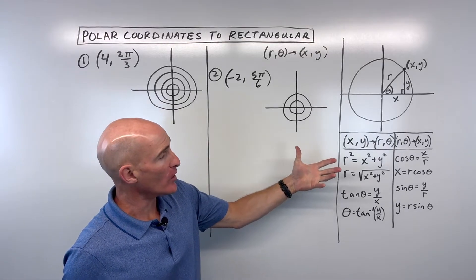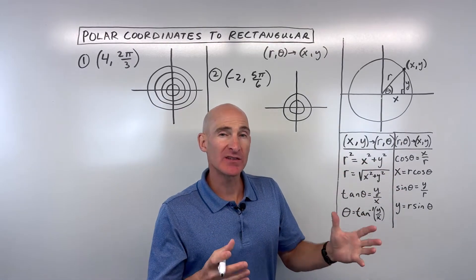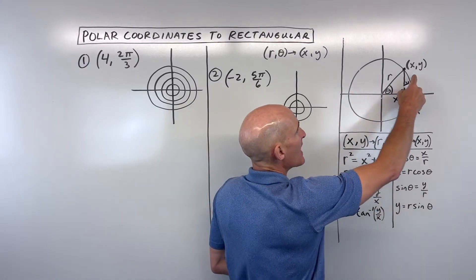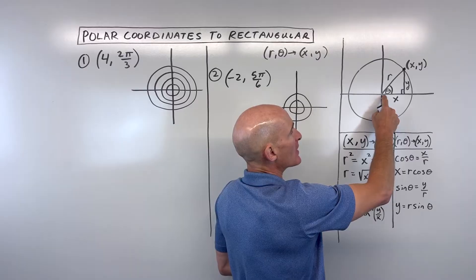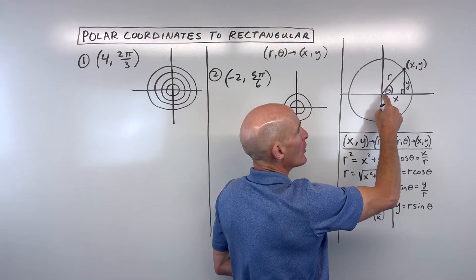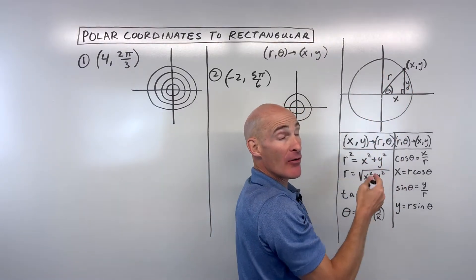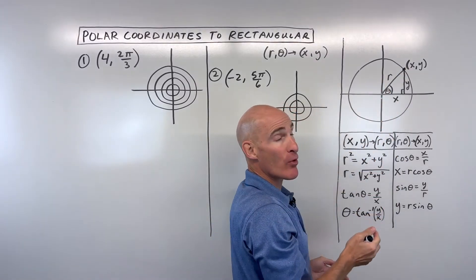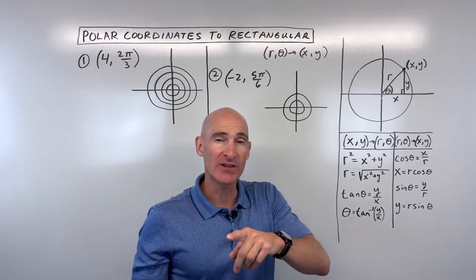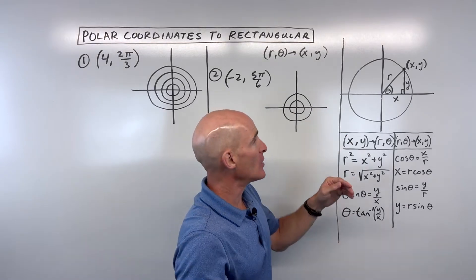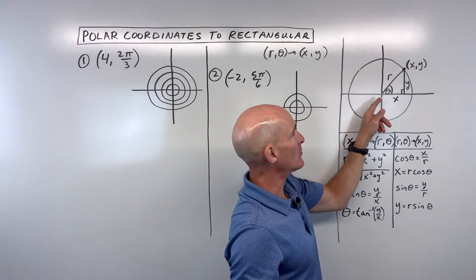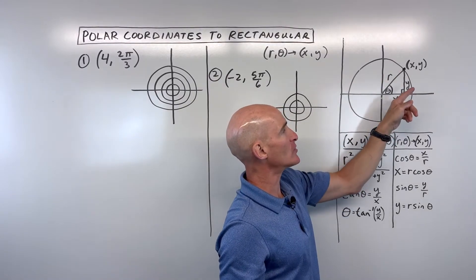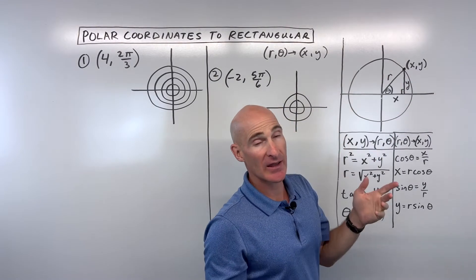The first thing you want to know is how exactly do we make these conversions? Well, it all becomes real clear when you draw this diagram right here. In rectangular form, we locate a point by going left and right, up and down — that's our x, y form. In polar, it's more of like a circular way of locating a point. You've got a radius, which is the distance from the pole or the origin, and then you have an angle of rotation — that's how you locate the point.